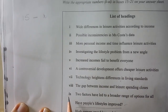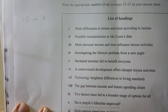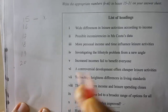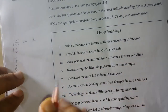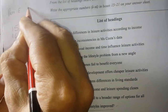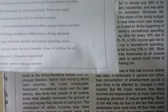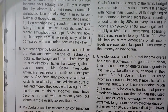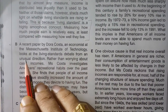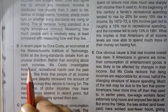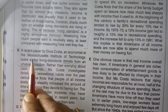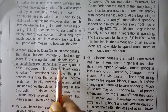After that we'll go to 16, 17, 18, 19, 20, and 21. Only paragraph E was done as an example with answer iii given. Now let's go to paragraph B. 'A recent paper by Dora Costa, an economist at MIT, looks at the living standards debate from an unusual direction.' So the keyword here is 'unusual direction.' There is a connector: 'rather than...'